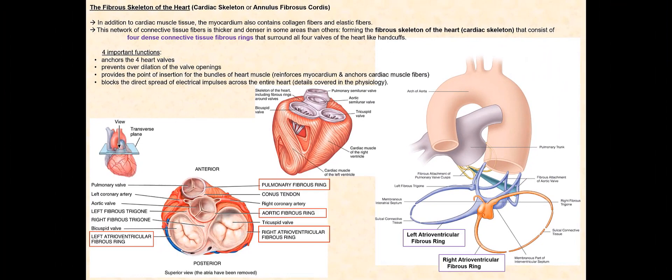We do not have these three additional fibrous attachment sites associated with the left atrioventricular fibrous ring or the right atrioventricular fibrous ring. More details later when we cover the valves of the heart. Another important function of the cardiac skeleton is it prevents the opening of these four valves from over-dilating or over-stretching as blood passes through them. The cardiac skeleton also provides the point of insertion for bundles of cardiac muscle, basically reinforcing the myocardium and anchoring the cardiac muscle tissue. The last important function of the cardiac skeleton is it blocks the direct spread of electrical impulses across the entire heart. The details will be further discussed in the physiology.